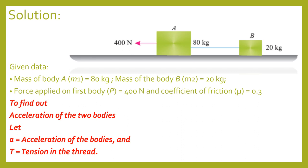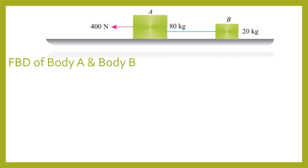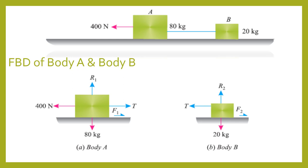First, we draw the free body diagram of both bodies. The free body diagram is the diagram of a body free from supports — here the support is the horizontal surface. For body A, we draw the free body diagram showing all the different forces acting on the body.